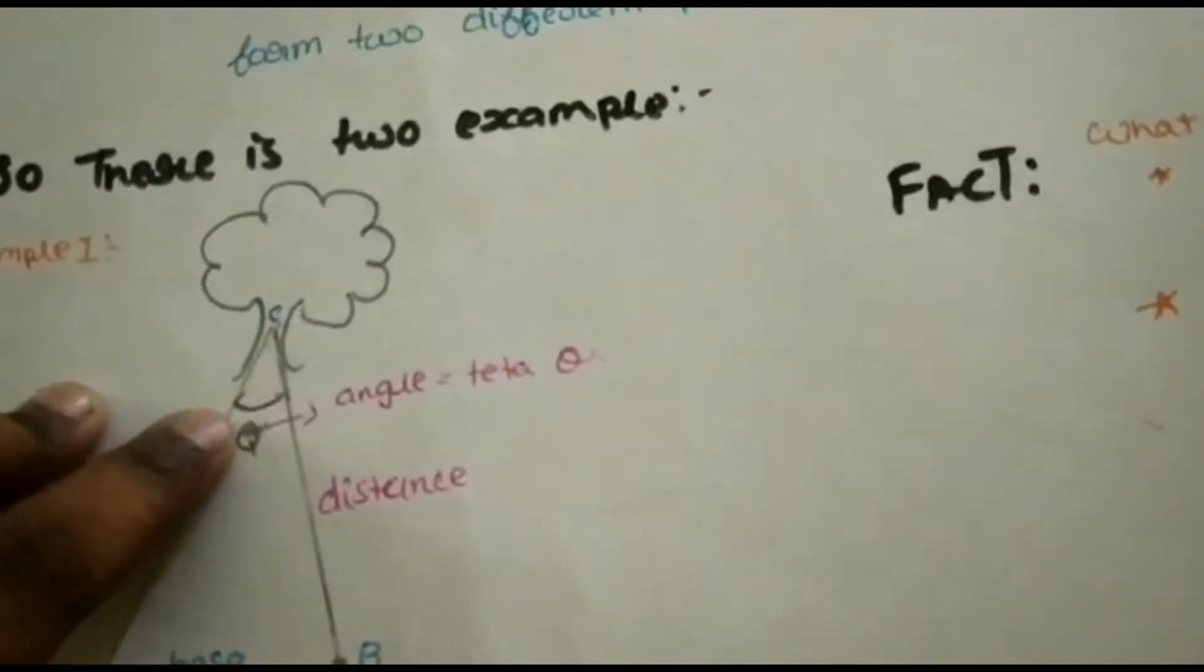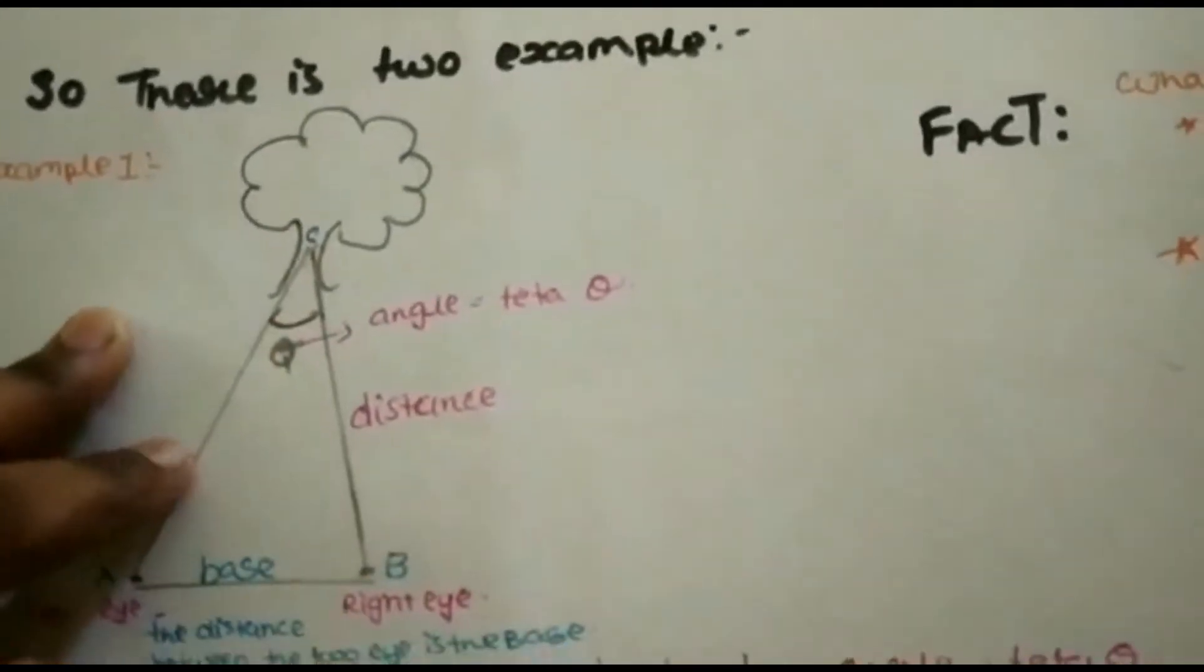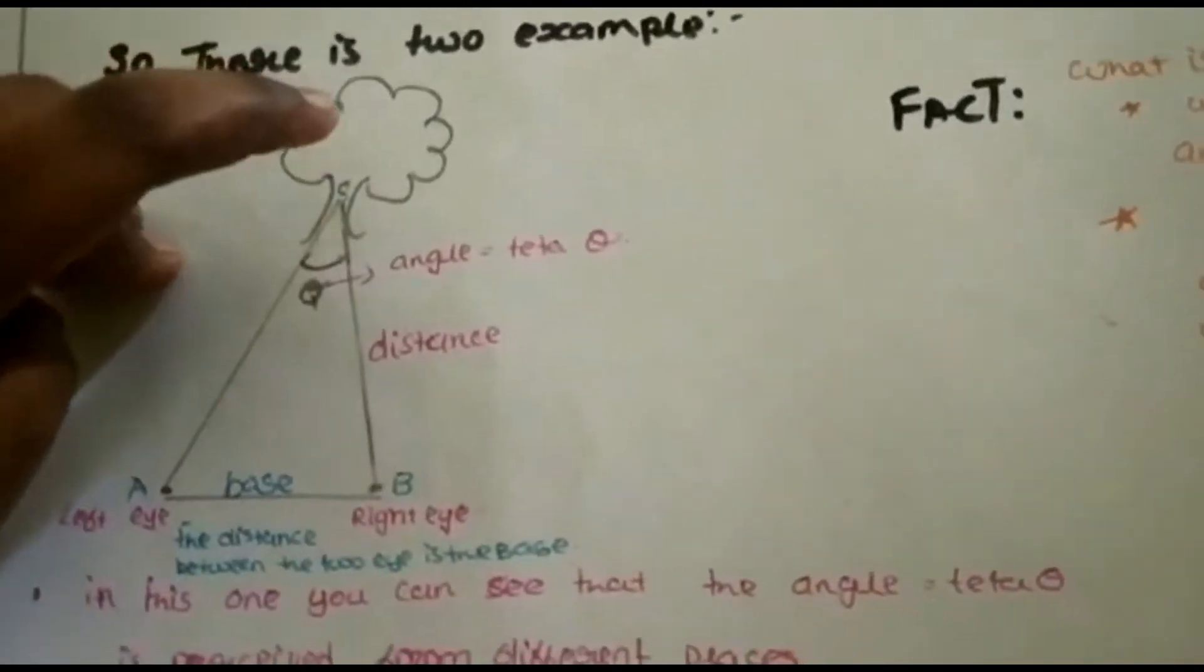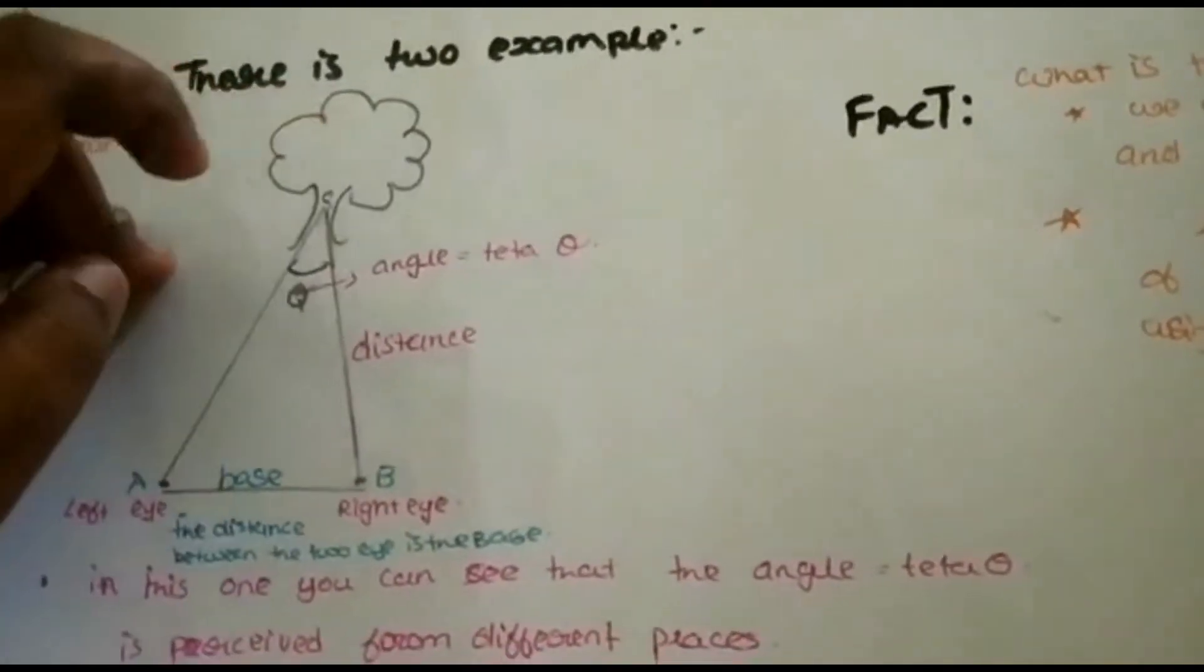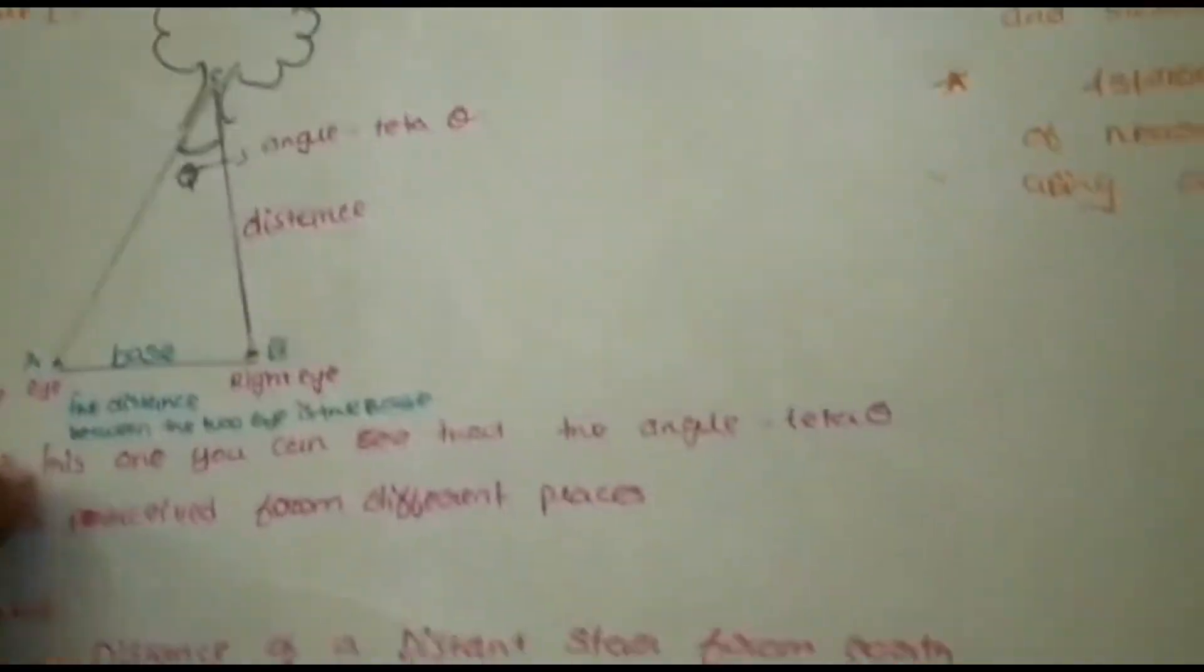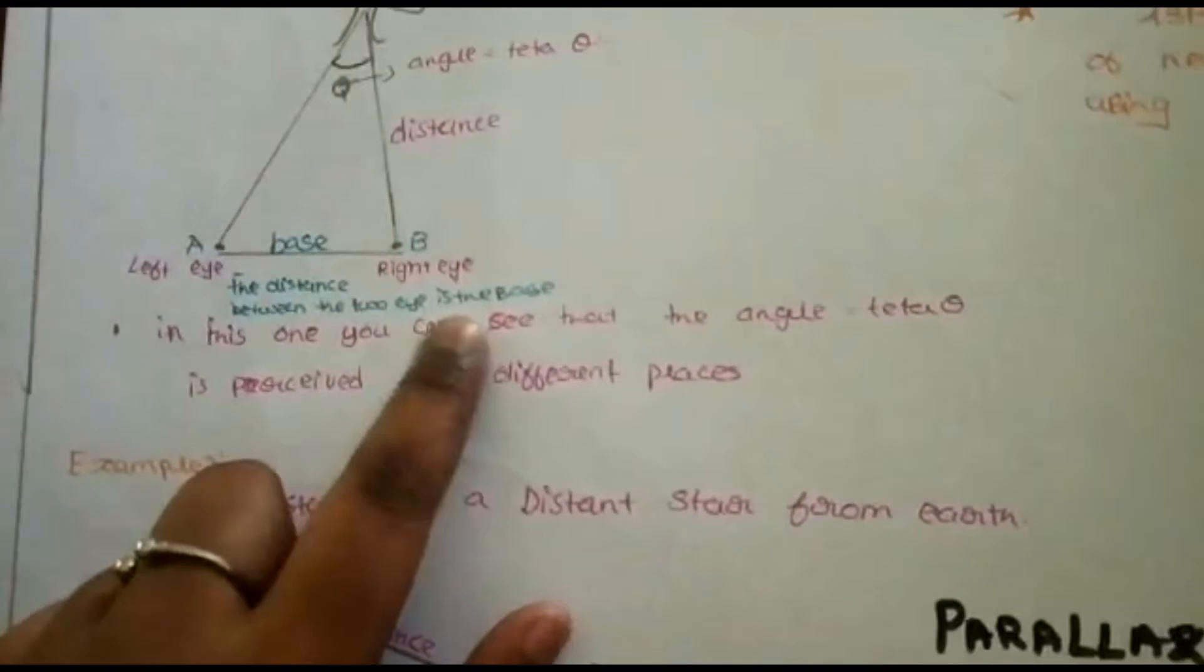The angle is called theta. The distance is between the tree and the eyes. The base is the distance between the two eyes.